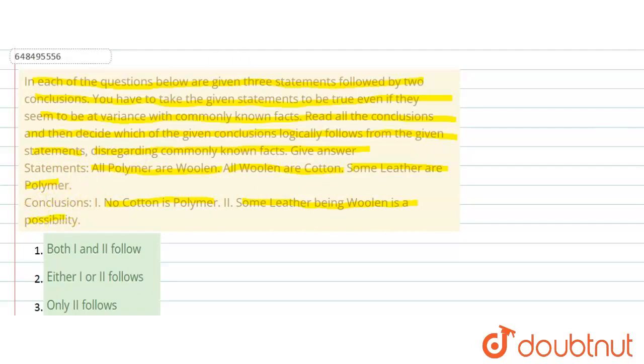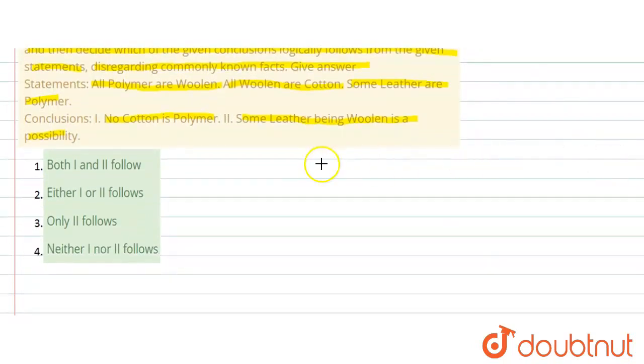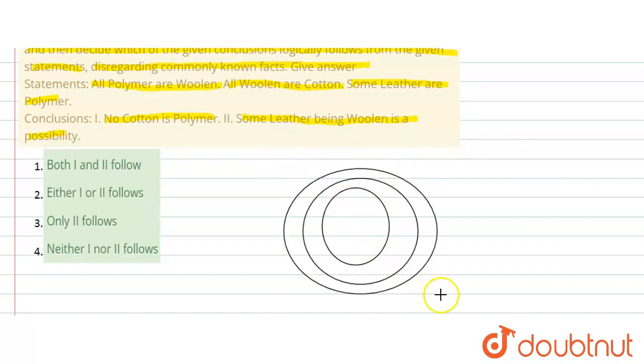So first of all, you have to draw a Venn diagram. Given is all polymer are woolen, all woolen are cotton, some leather are polymer. So here are the given.